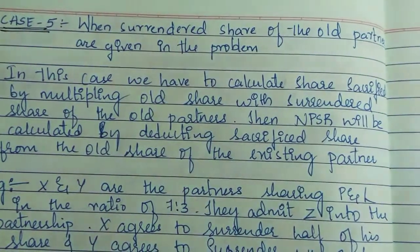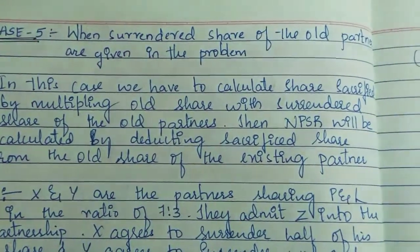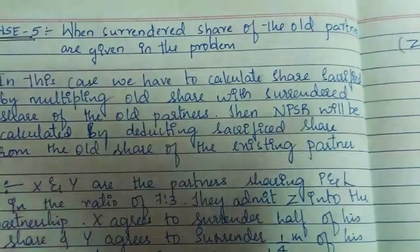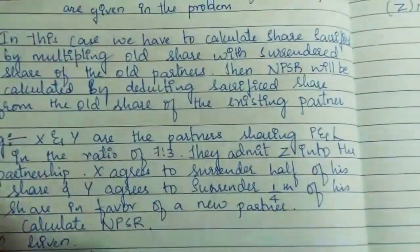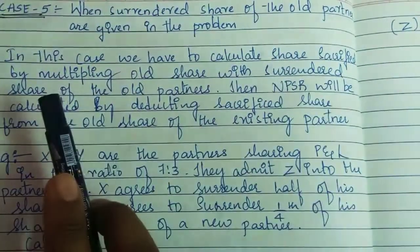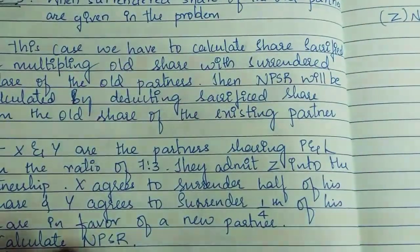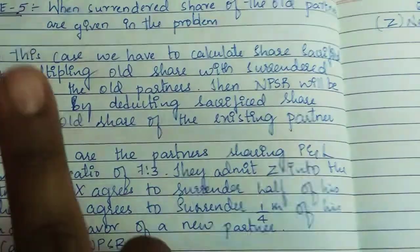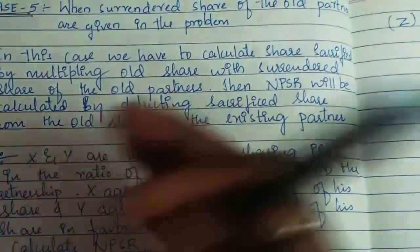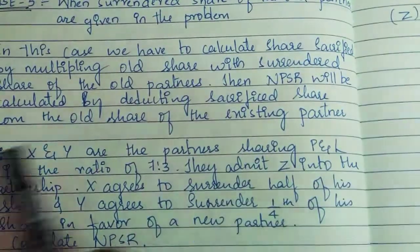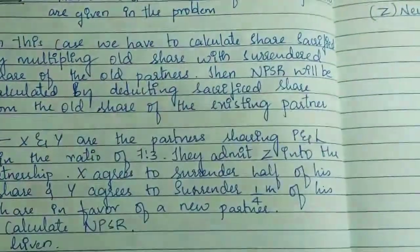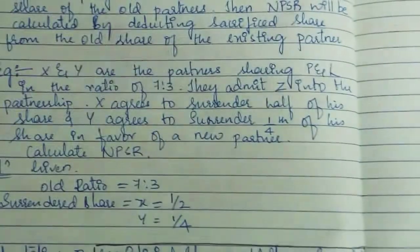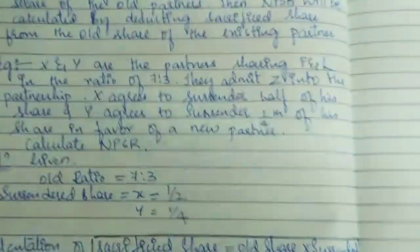What about the 5th case? When the surrender share of the old partner is given in the problem, we follow this case. If the surrender share of the old partner is given, then we have to calculate the share sacrificed, by multiplying the old partner's share with their surrender share. Then NPSR is calculated as old ratio minus sacrifice share.